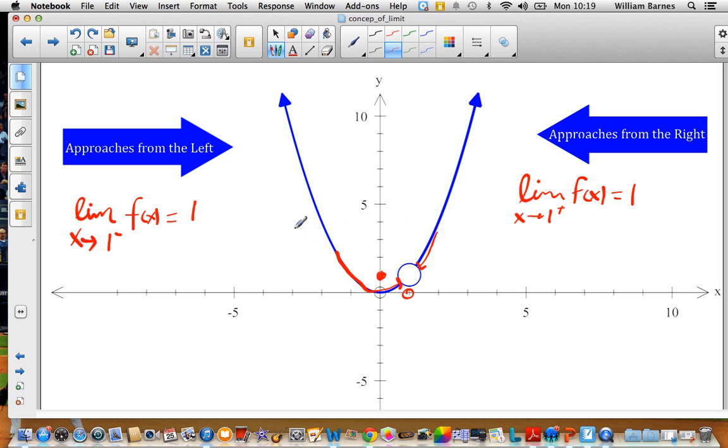So what we notice is that as we approach from both sides, we're approaching the same number. So that's another fundamental concept of a limit. That in order for a limit to exist, it has to approach the same number from both sides of the graph.